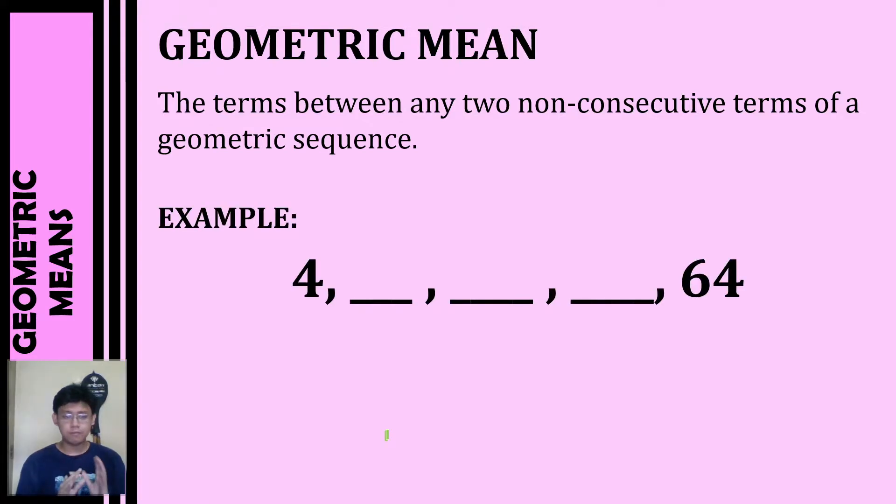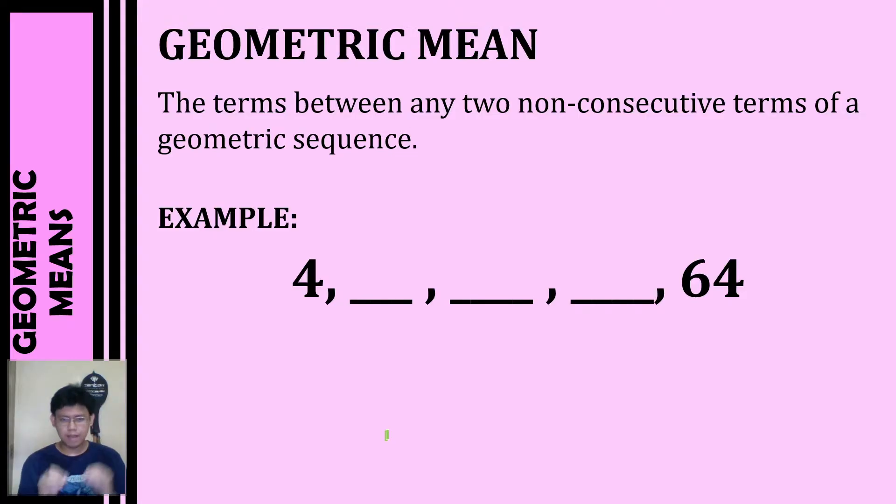So for example, we have 4, blank, blank, blank, 64. So we have three missing terms between these two non-consecutive terms. So these three parts here are called the geometric means.